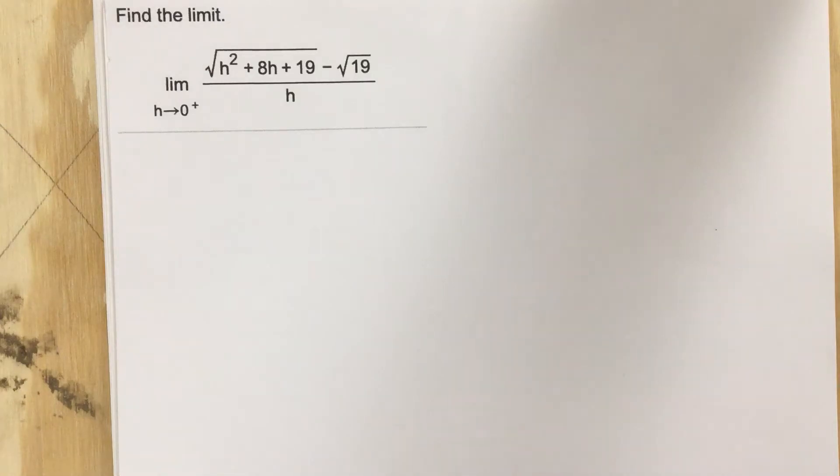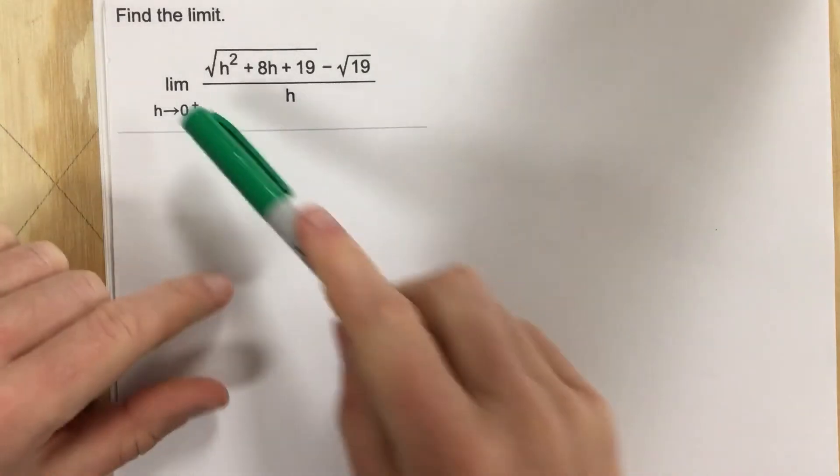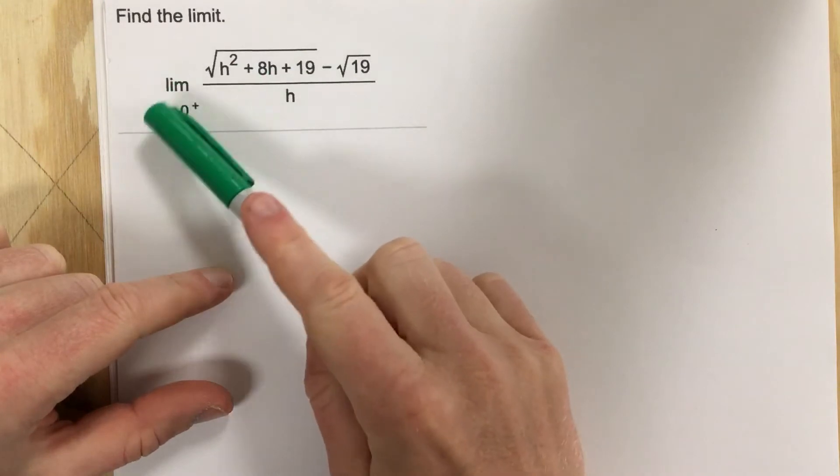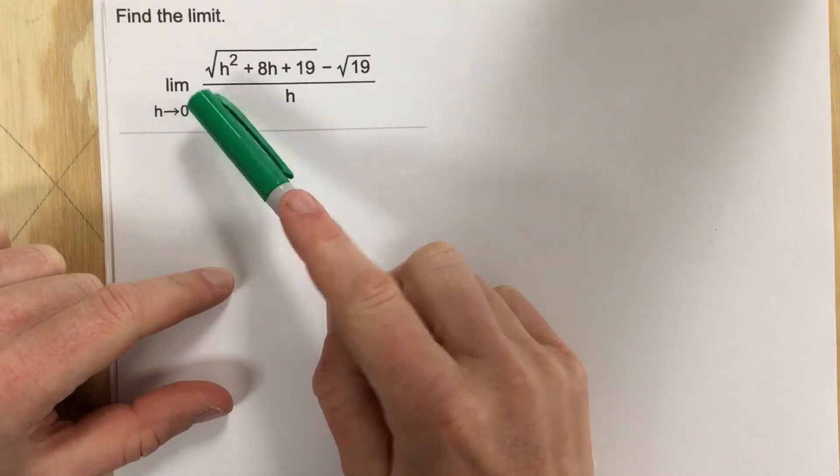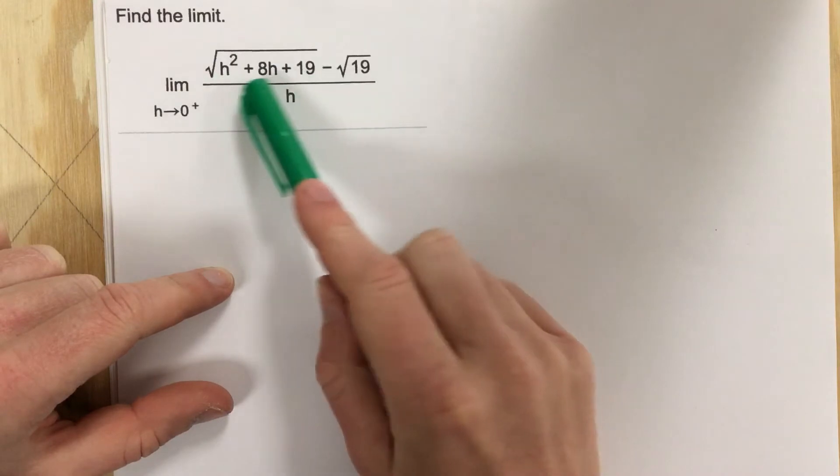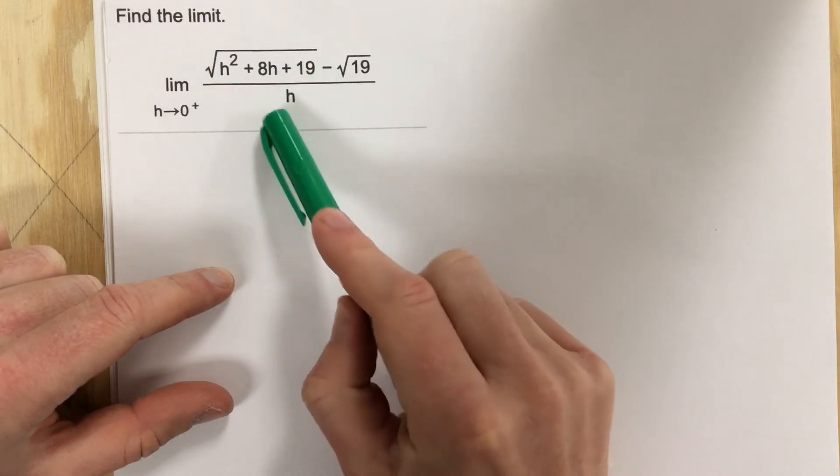This is problem number five from section 2.4. In this problem it says find the limit and they give you a limit as h approaches zero from the right and they give you this rational function denominator of h.